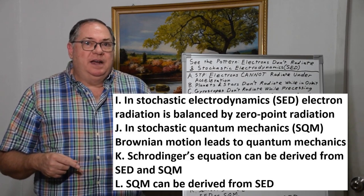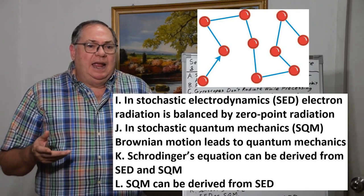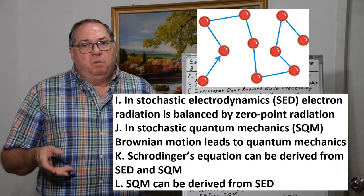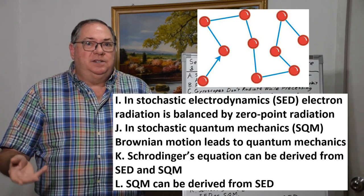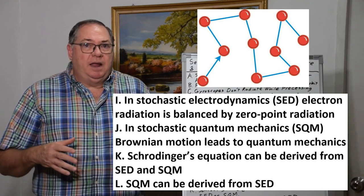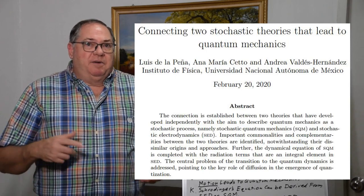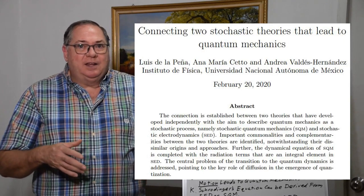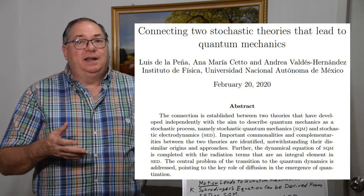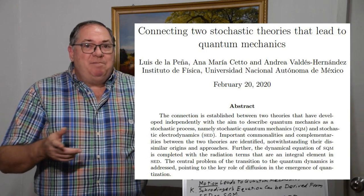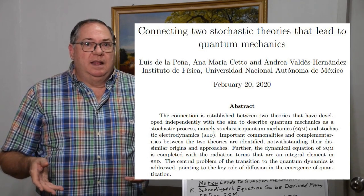There's another variation — stochastic quantum mechanics — developed around the same time in the 1960s, based on Brownian motion. What the discoverer found is that if you have an electron undergoing Brownian motion in an atom, that leads to the Schrödinger equation. So both forms — stochastic electrodynamics and stochastic quantum mechanics — can be used to derive the Schrödinger equation. A paper I recently read shows you can derive stochastic quantum mechanics from stochastic electrodynamics, so they're really looking at the same thing. The cause of the Brownian motion is the zero point field, and the quantum jump mechanism provides the actual Brownian motion that leads to the quantum mechanical effects.